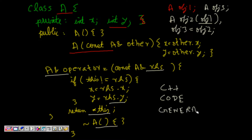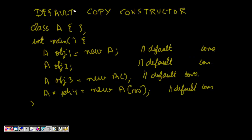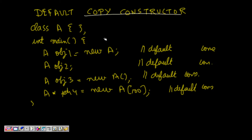One important thing to note — which can come up in interview questions — is about the default constructor. If you don't write any constructor at all, C++ will generate a default constructor with no arguments. But if you define any constructor, whether with one argument, two arguments, or no argument, then C++ will not generate a default constructor for you.